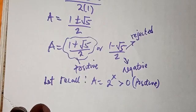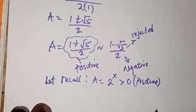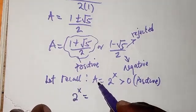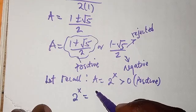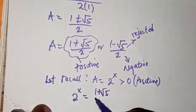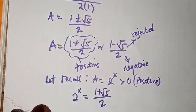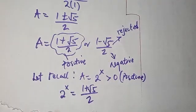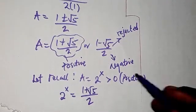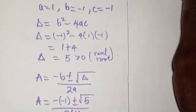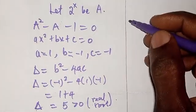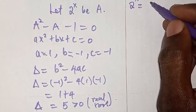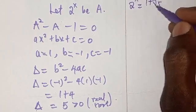So we are going to pick only that positive value. We have 2 to the power x equals a equals 1 plus root 5 over 2. So 2^x equals (1 + √5) / 2.